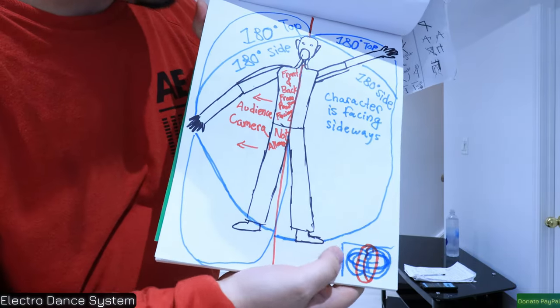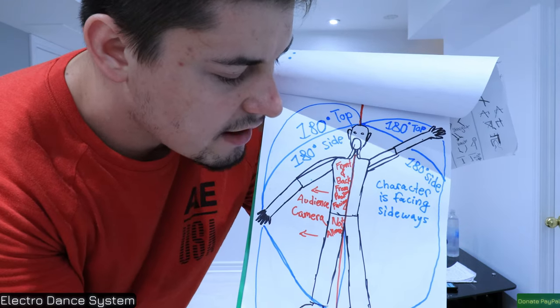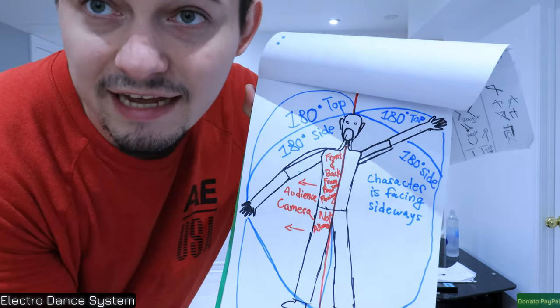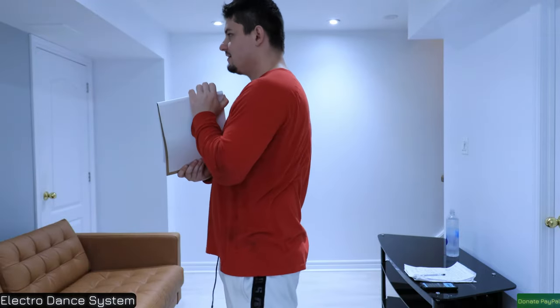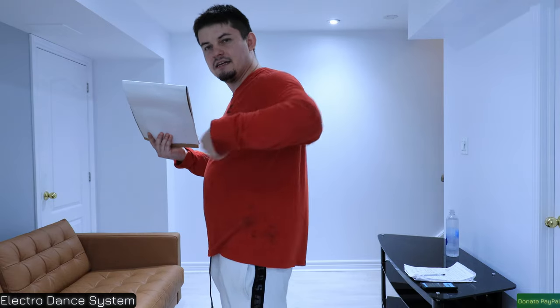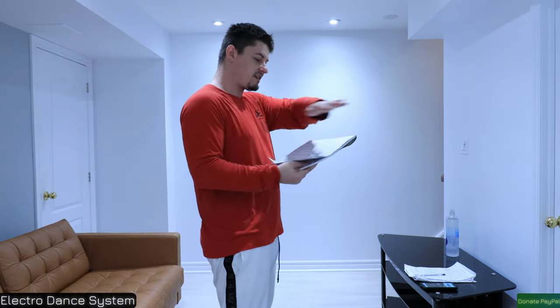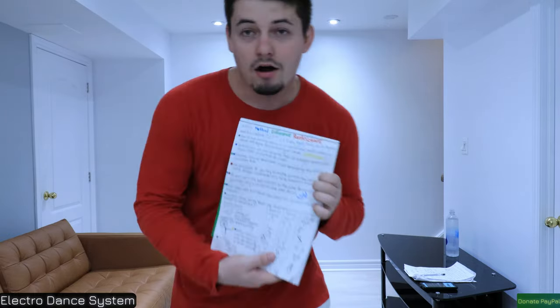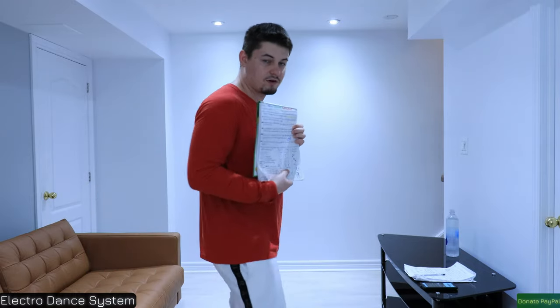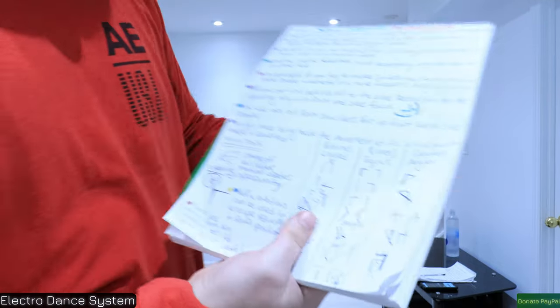When you're facing any direction and you rotate either to the side or back — or front — that is considered the side. So if I'm facing this way, this is my side, because the camera is facing towards me. The audience and the camera are looking straight towards me, so if you always want to go sideways towards the camera or the audience, that will be considered your side. That's very important.